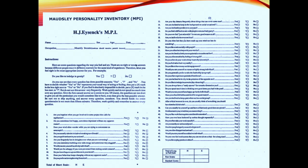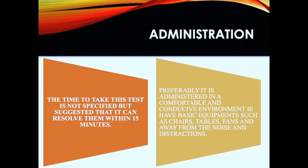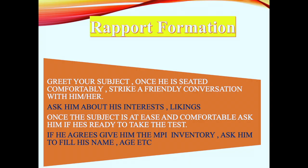Here we have given an example — a prototype of the MPI. While administering, there is no time limit but usually people finish in 15 minutes. Preferably, administration should be in a comfortable, conducive environment with basic equipment such as chairs and tables, and the room should be devoid of any noise or distractions. Once your subject is comfortably seated, strike a friendly conversation with them to form a rapport — ask about interests, likings, and aspirations. Once the subject is at ease, ask if they are ready to take the test, and if they agree, give them the MPI inventory.